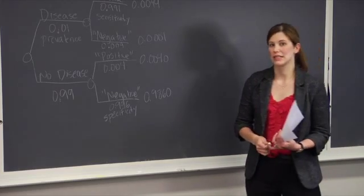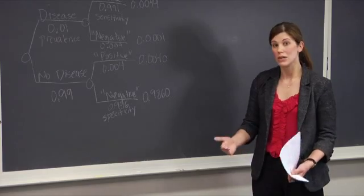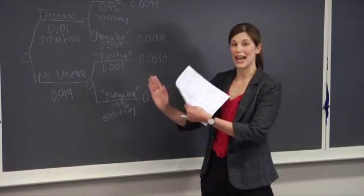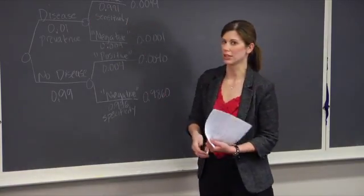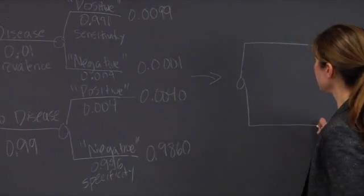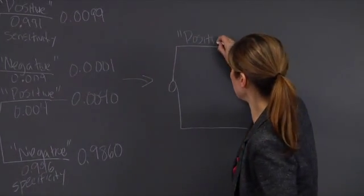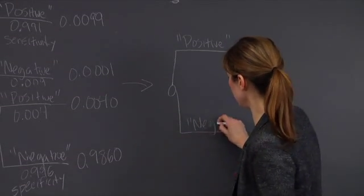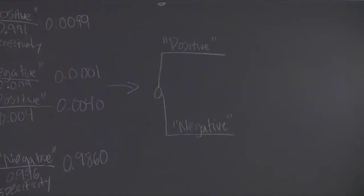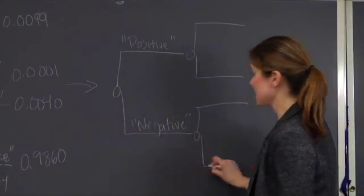The question we're actually interested in addressing is: if a person has an HIV positive test, what's the probability that they actually have the disease? In order to answer that question, we're going to flip the tree — we want to flip the order of the branches. So now my first set of branches are going to correspond to a positive test or a negative test, and the next set of branches will correspond to whether or not a patient has a disease or no disease.